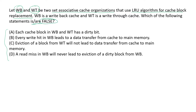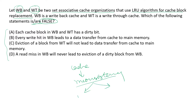First, let us understand the difference and the need for write-through and write-back cache. Whenever we want to write to any address, we first check in the cache if that address is present or not. If it is already present, we can avoid the expensive main memory access. However, in a multi-processing system where multiple devices share the main memory, this can lead to an inconsistency problem because the value in the cache and in the main memory would be different.